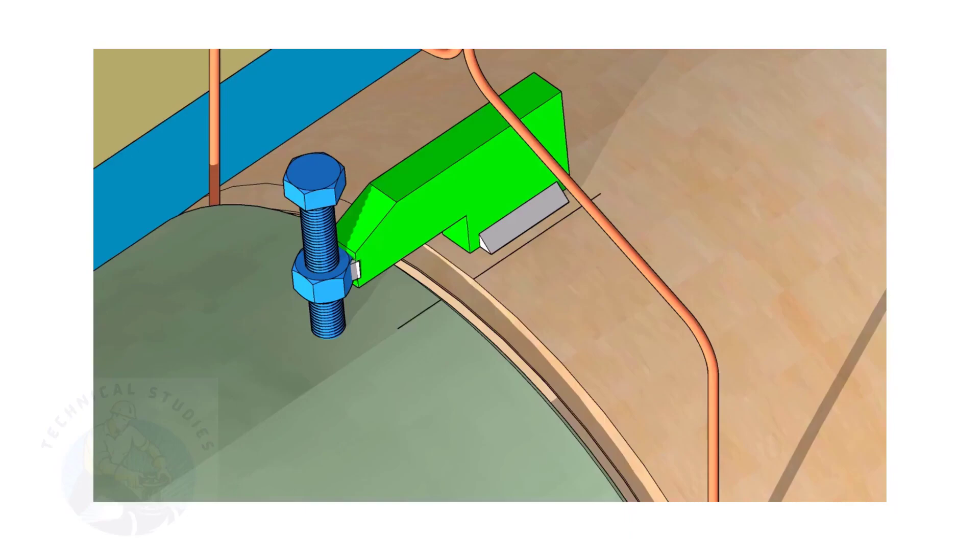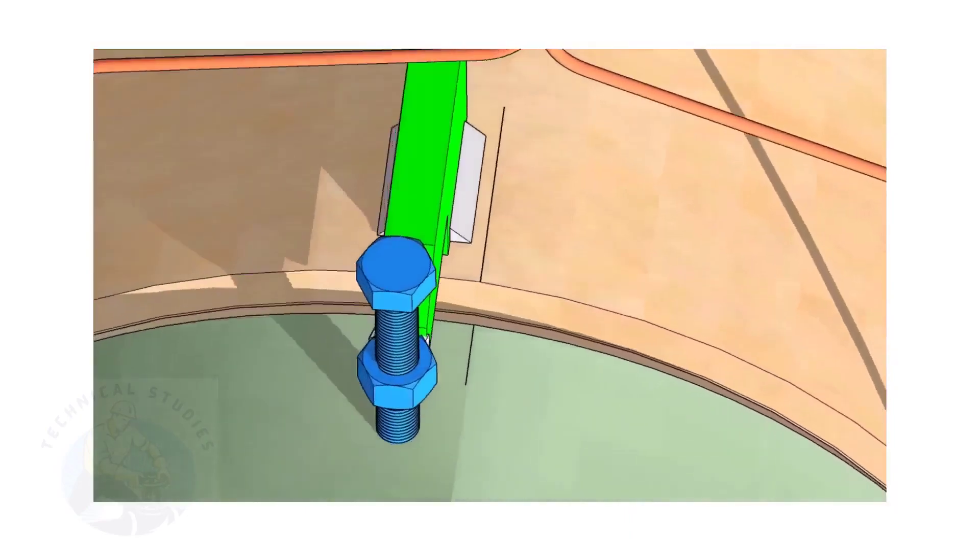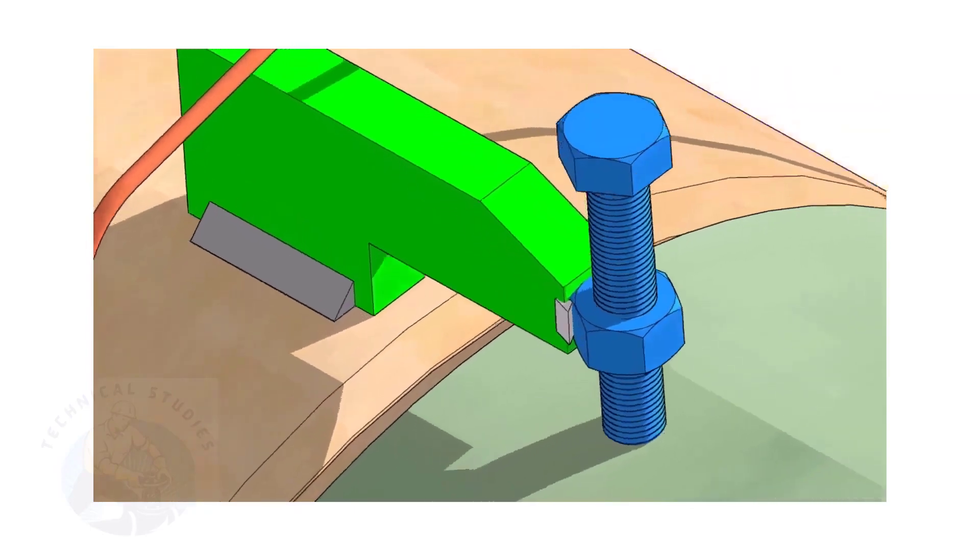Put the gap rod in the joint. The gap shall be 3 millimeters to 4 millimeters, depending on the welding process.